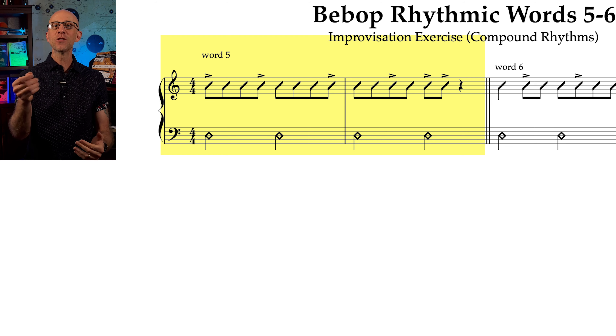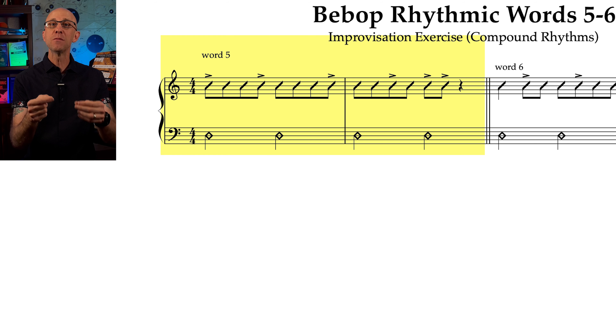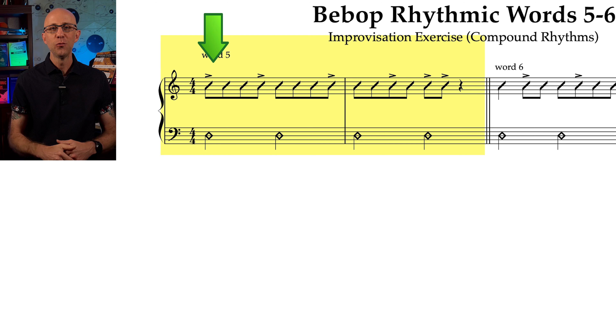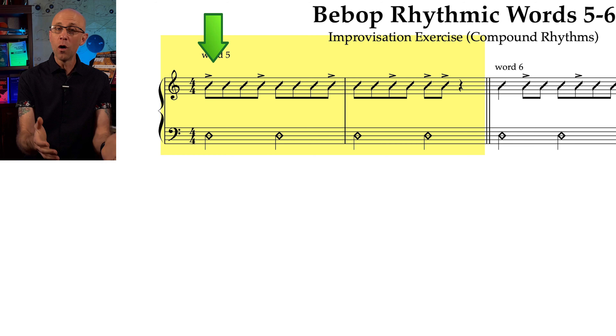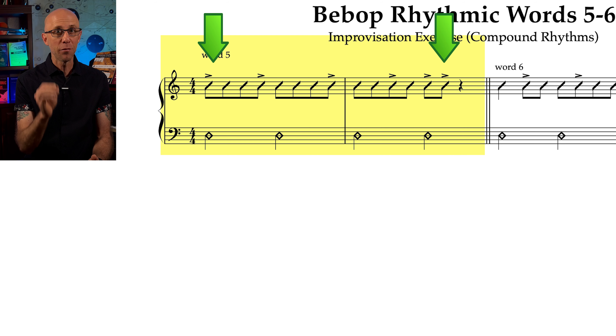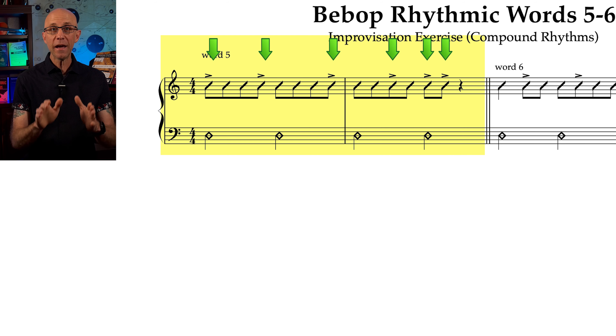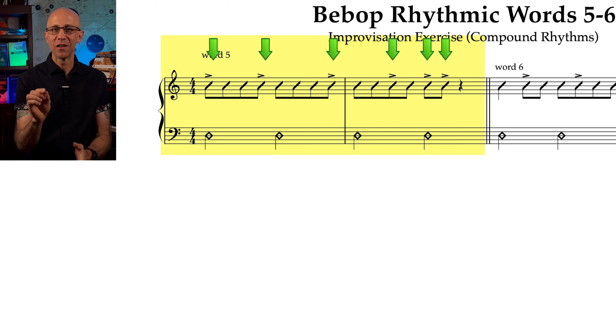At first glance this looks like a simple word made out of a stream of eighth notes. We start on beat one and end on the and of three of the second measure. But we're going to add accents on specific beats like this.